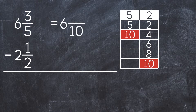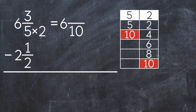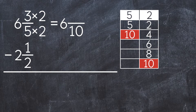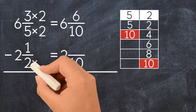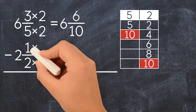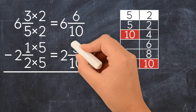To get 10 in the denominator, we multiply 5 by 2. We also multiply the numerator by 2, to get 6 and 6 tenths. Now let's rename 2 and 1 half. To get 10 in the denominator, we multiply 2 by 5. We also multiply the numerator by 5, to get 2 and 5 tenths.